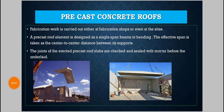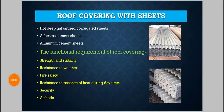Precast concrete roofs, as the name suggests, are generally cast either in fabrication shops or at the site in a controlled environment, to avoid environmental impact during the casting procedure. This type is preferred where construction work needs to be completed more rapidly, as it requires less time since the elements are cast in advance and only need to be placed in the required position.